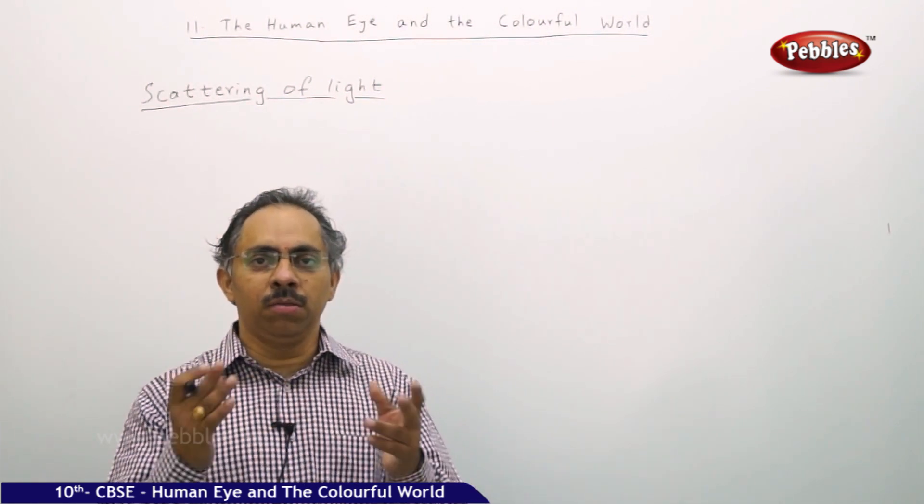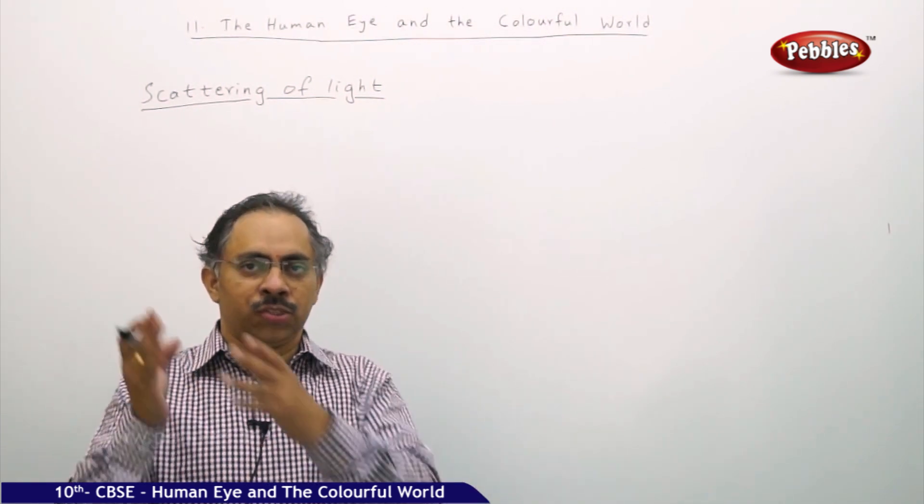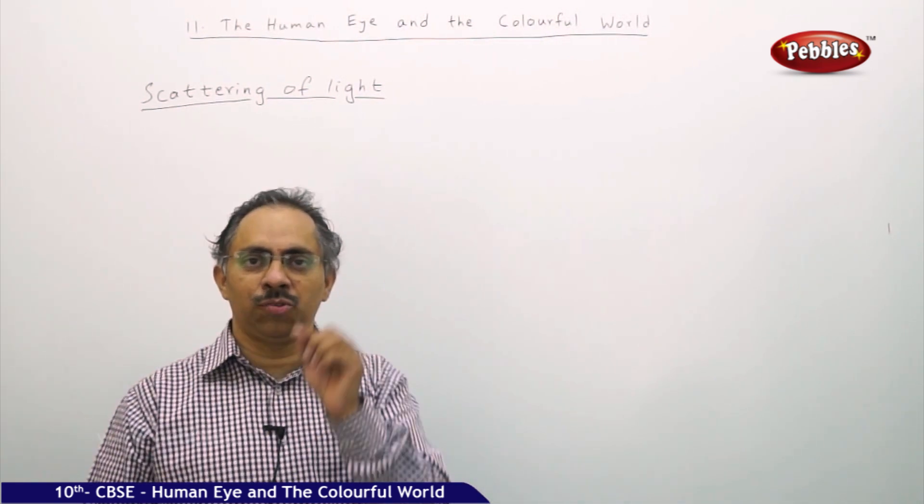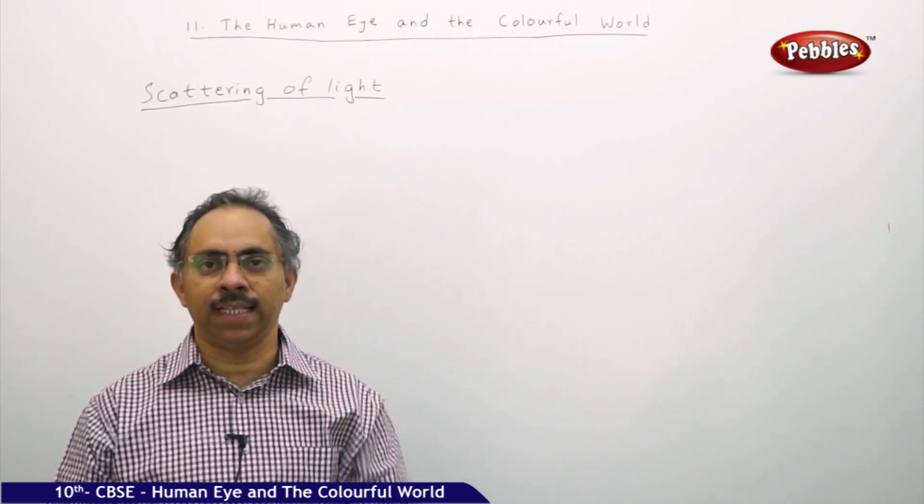So why are you able to observe that streak of light? It is because of the dust. These dust particles, which are tiny in size, are scattering the light which is incident on them.